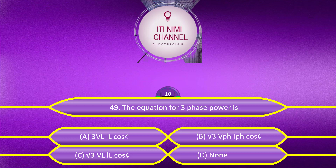The answer is Option C: √3 × line voltage × line current × cos θ.